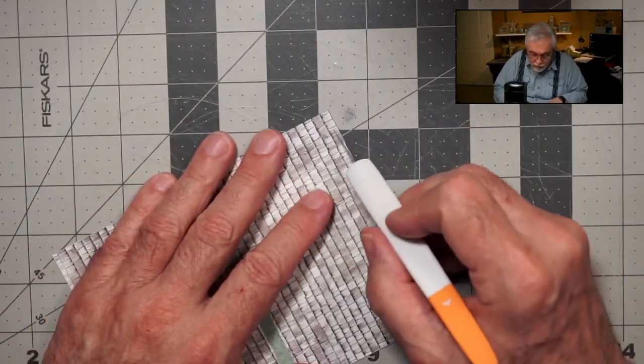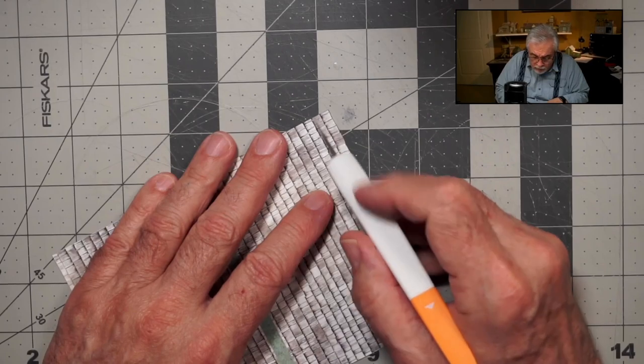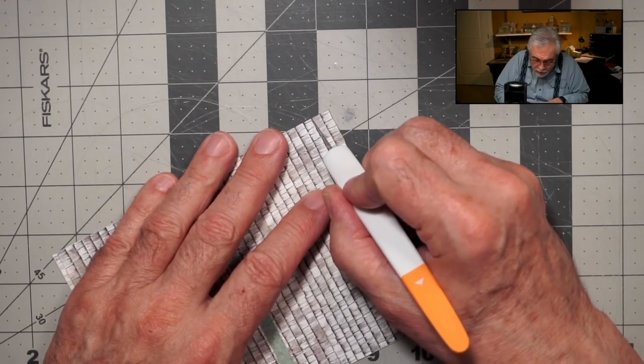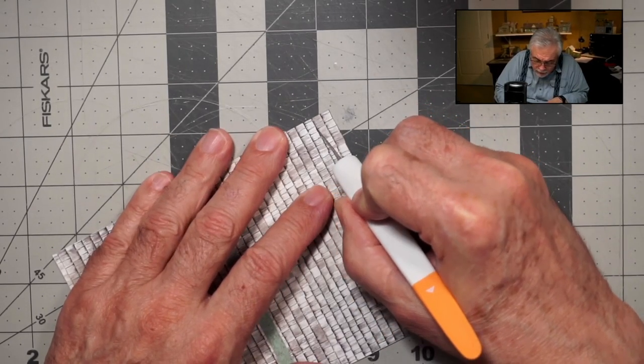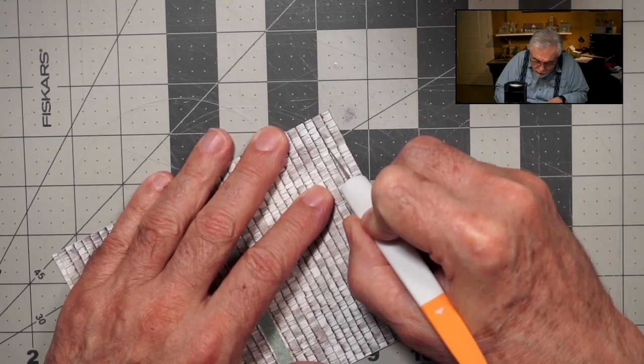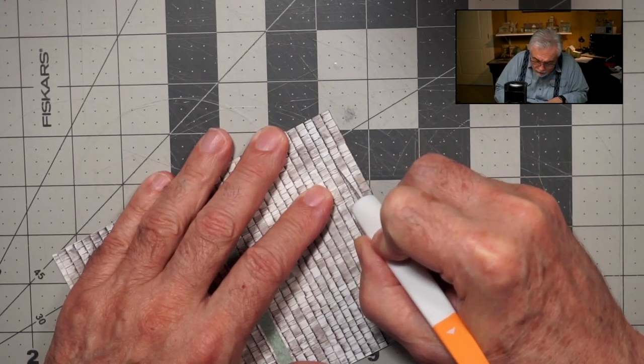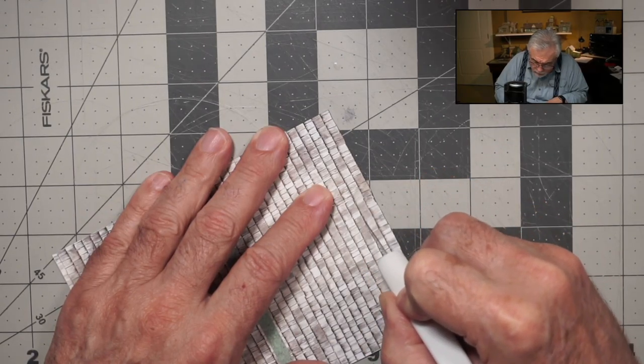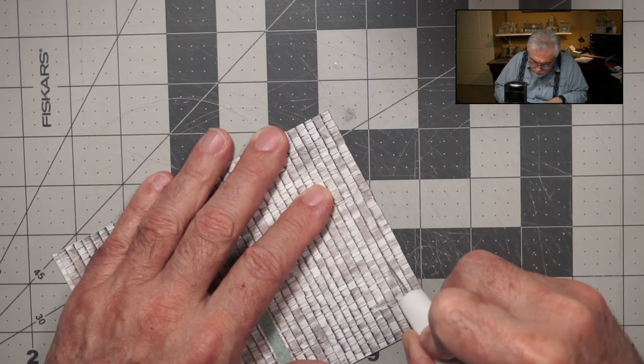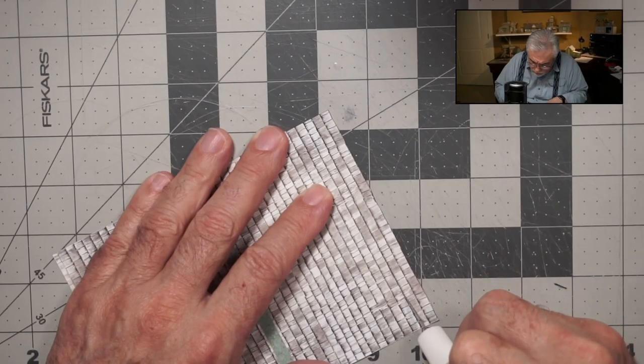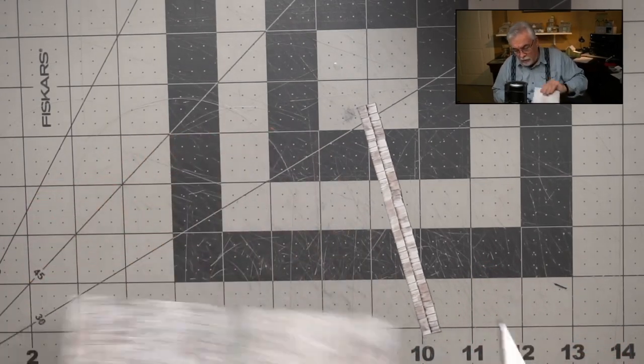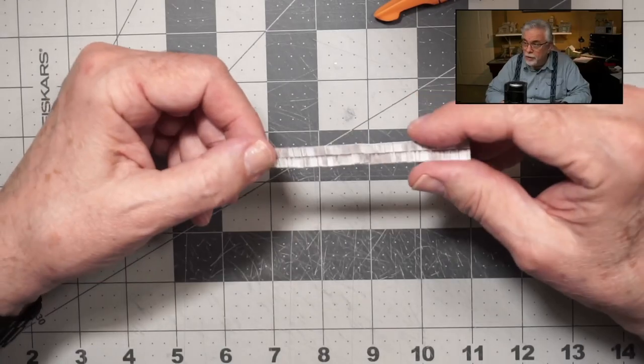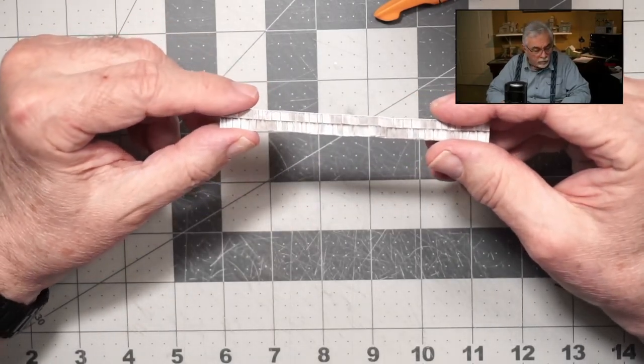The next step is to go up two rows and cut that again, just like you did on your first row. And follow the relief. So this gives us our first row for the shingles.